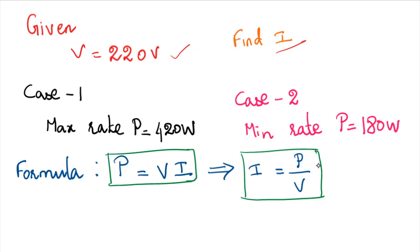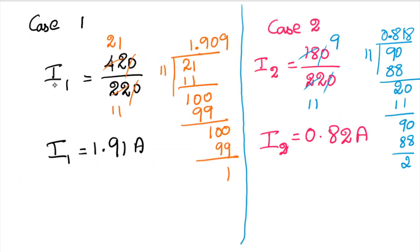Therefore, I = P divided by V. For Case 1: current = 420 divided by 220. We can simplify this to 21 divided by 11, which gives 1.909, approximately 1.91 amperes. The unit is compulsory — the unit is amperes.